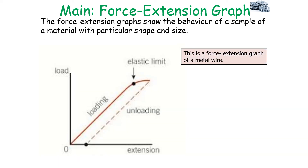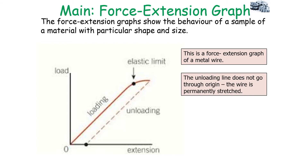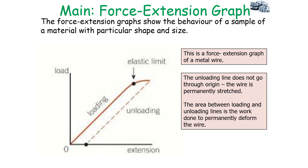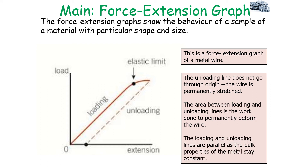This force extension graph is for a metal wire. The unloading line does not go through the origin because the wire has been permanently stretched by the loading and unloading process. The area between the loading and unloading lines is the work done to permanently deform the wire inelastically. The loading and unloading lines are parallel because the bulk properties of the metal stay constant — it is not changing its material properties, it has just become inelastic.